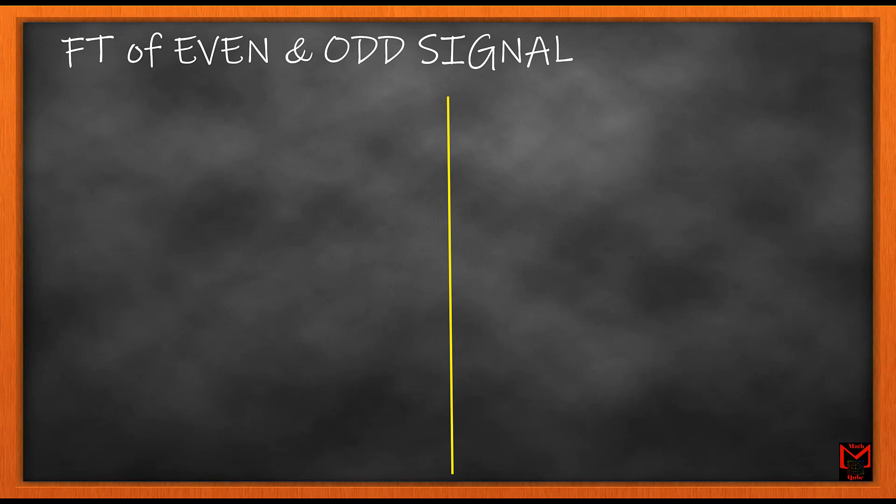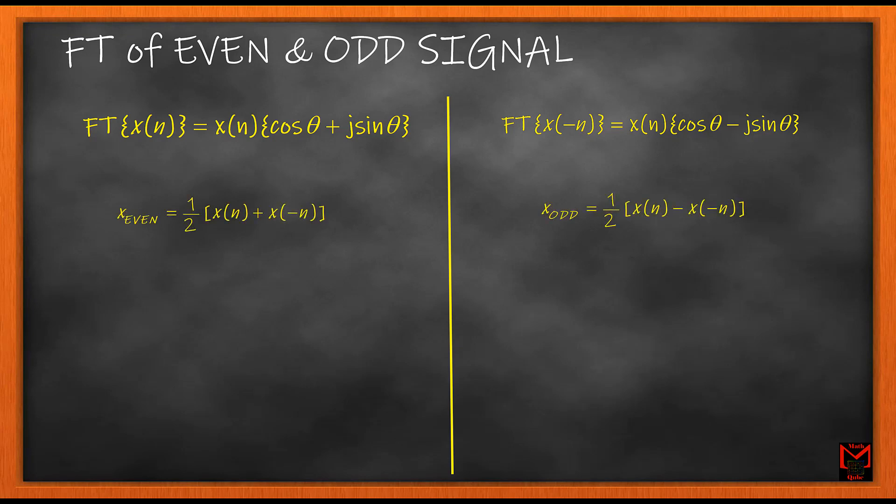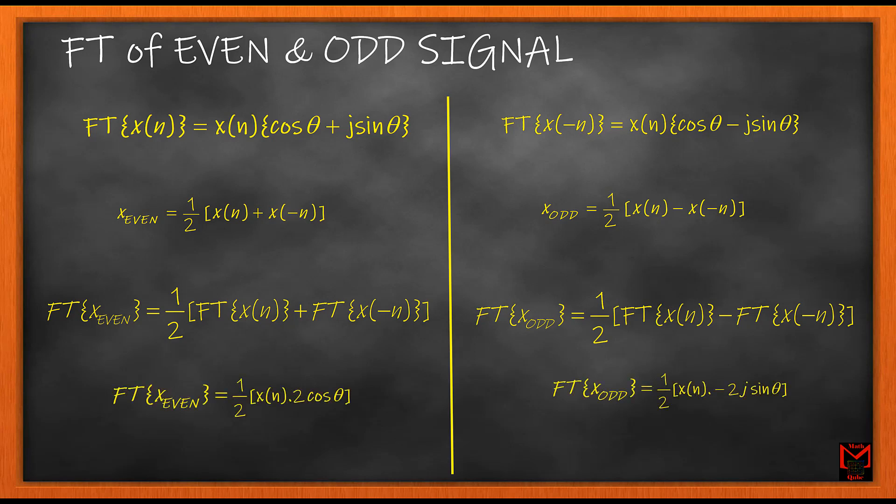With Euler expansion, the Fourier transform of an even signal is purely real whereas the Fourier transform of an odd signal becomes imaginary. The reason for the Fourier transform of an even signal being purely real is because the sine components cancel each other. For an odd signal to be purely imaginary, the cosine components must cancel each other.